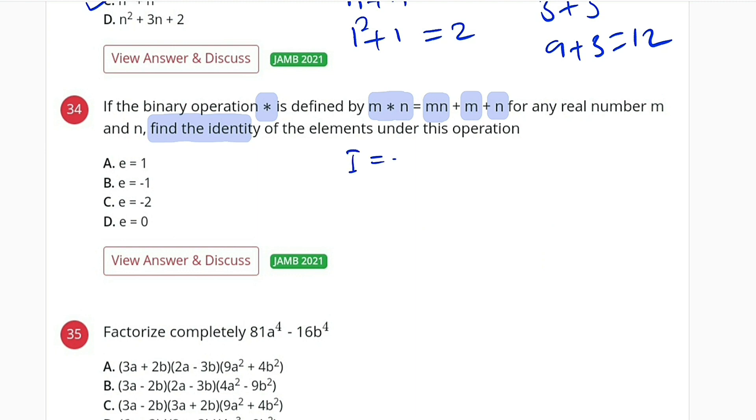Suppose the identity is E. If you should relate any number, M or N, with this identity, it will not change it. Suppose we have N asterisk E, it will remain N. It won't change. But what is the definition of this? Because we want to find the value of E.